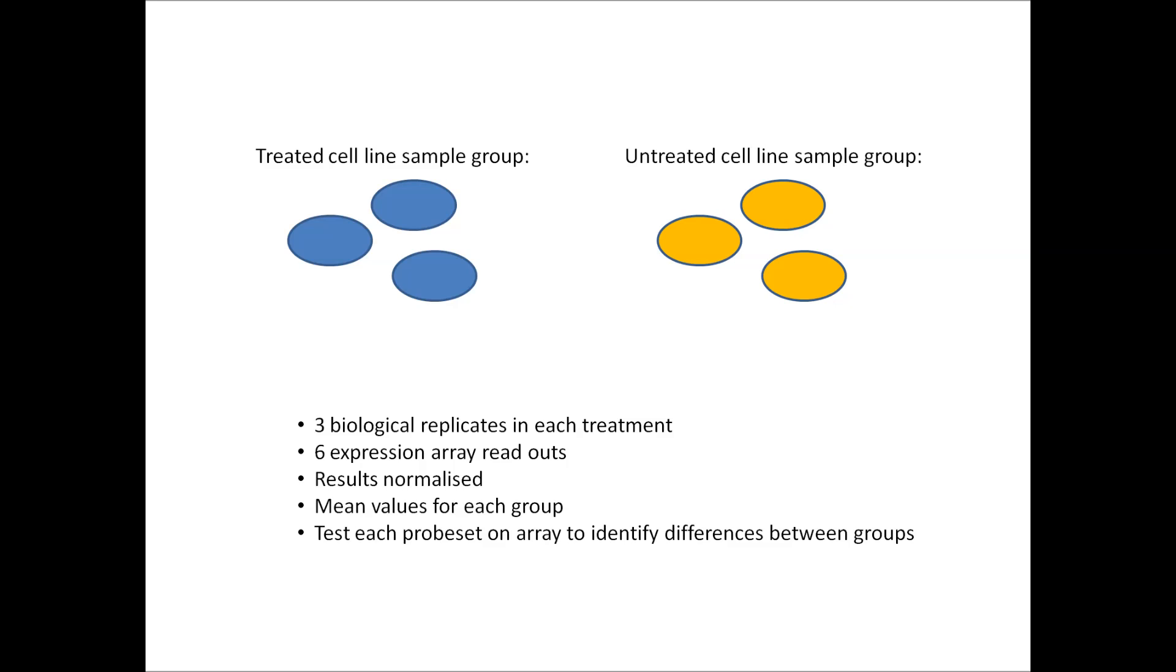Imagine you have the results for a microarray experiment and you want to know which genes are expressed in your treated cell line compared to an untreated one. There are three treated biological replicates and three untreated biological replicates. Replicates are good for estimating the variance in the results, i.e. the range over which expression values fall.